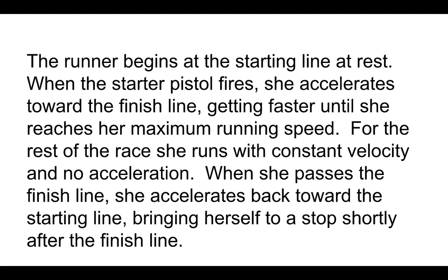For the rest of the race — between when she reaches maximum running speed and the finish line — she runs with constant velocity, meaning no acceleration. Constant velocity implies no acceleration, so it's a little redundant, but we're being very explicit. She's not changing her velocity, so acceleration is zero here. She'll run that way until she passes the finish line, at which point she slows down — meaning she's accelerating in the opposite direction of her velocity. So her acceleration would be backward toward the finish line, until she comes to a complete stop shortly after the finish line, which is both a velocity statement and a position statement.